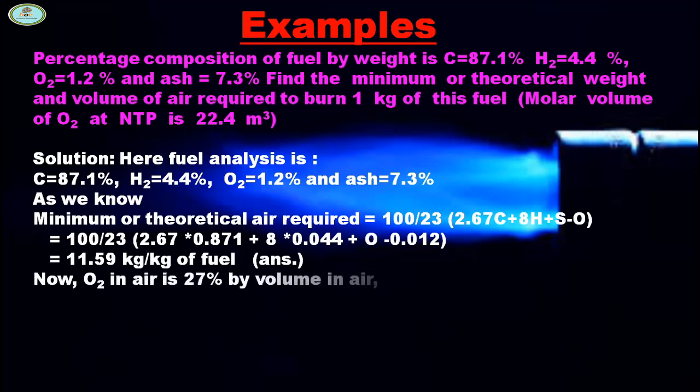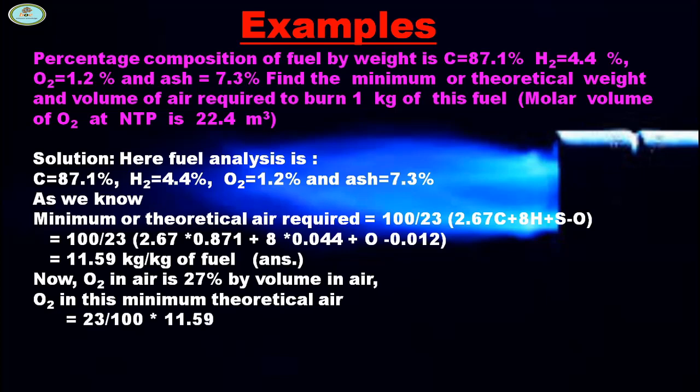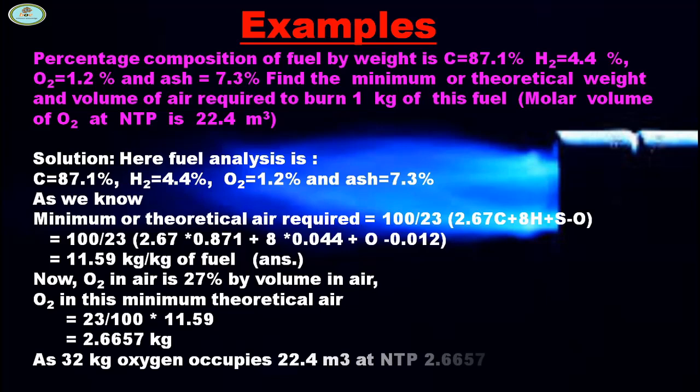Now, O2 in air is 27% by volume in air, so O2 in this minimum theoretical air is 23/100 × 11.59 = 2.6657 kg. As 32 kg oxygen occupies 22.4 m³ at NTP, 2.6657 kg occupies the calculated volume.